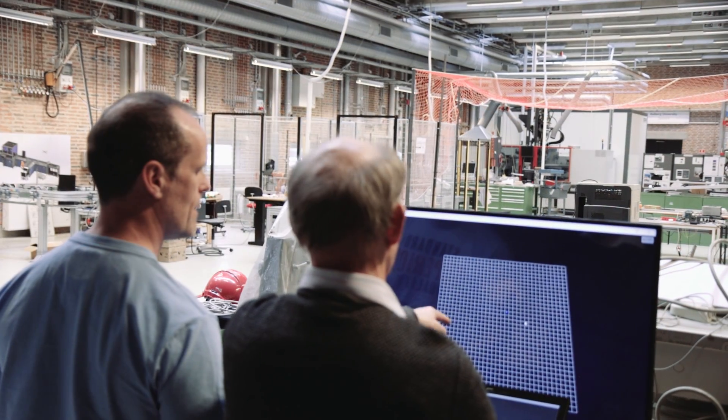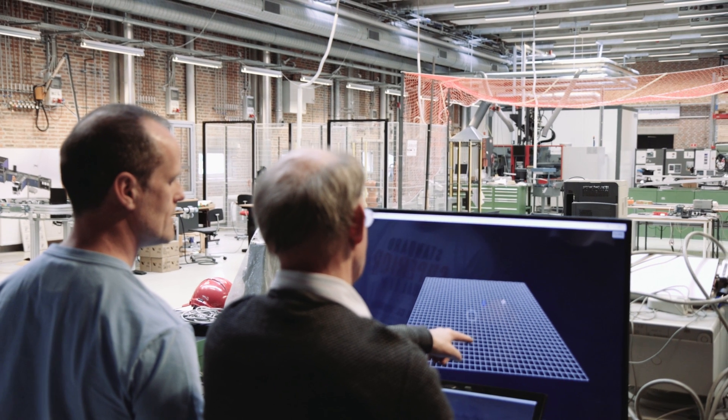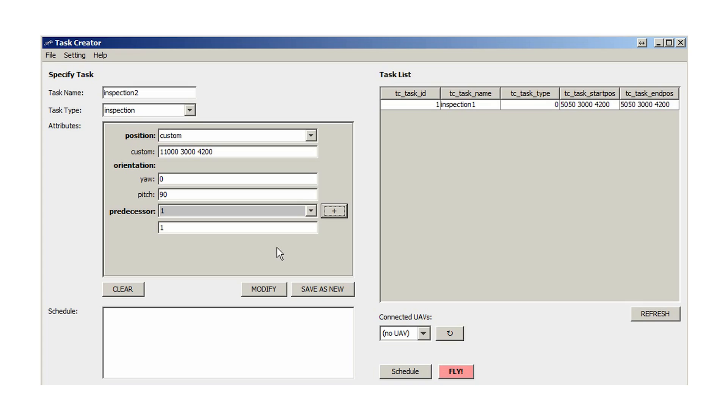The quality inspection tasks are planned and coordinated by a task scheduler which is integrated with the existing production planning system.